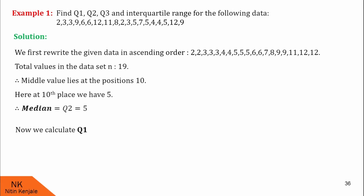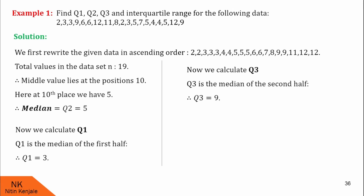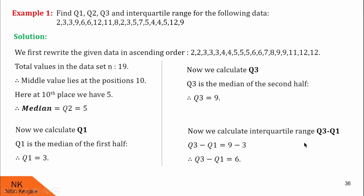For quartile one, which is the median of the lower half: the lower half has 9 values, so its median lies at the 5th place, and at the 5th place we have value 3. Therefore Q1 is 3. Similarly, quartile three is the median of the upper half. The upper half consists of the last 9 values, and their median is also at the 5th position, which is 9. So Q3 is 9. IQR is Q3 minus Q1, which is 9 minus 3 equals 6. So IQR is 6.